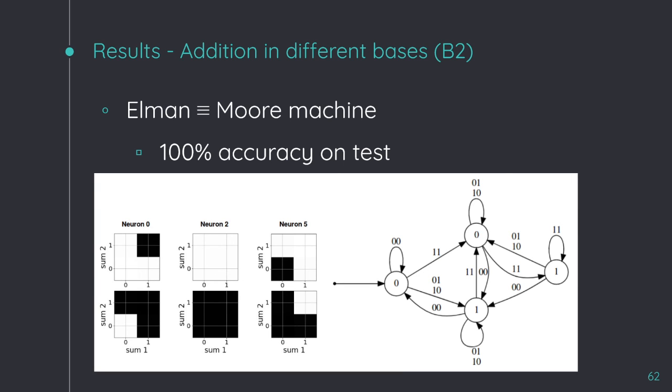This is a cool result. We can understand the Elman network internally, we understand the behavior of the neurons, and we can, of course, extract the automaton.